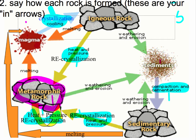Then say how each rock is formed — these are the in arrows to every rock layer. How do you get igneous rocks? They form from the crystallizing or cooling of magma. How do you get sedimentary rocks? Sediments get compacted and cemented together. How do you get metamorphic rocks? Heat and pressure re-crystallizing igneous, sedimentary, or metamorphic rocks. So there are a total of five different in arrows you need.